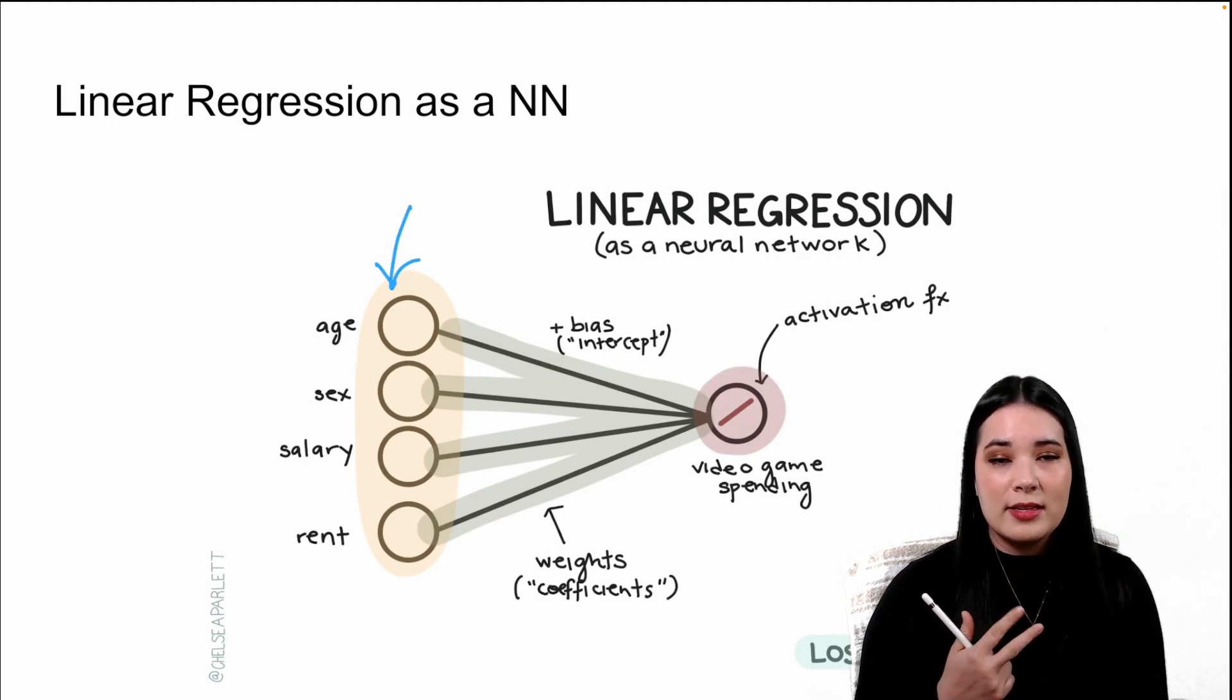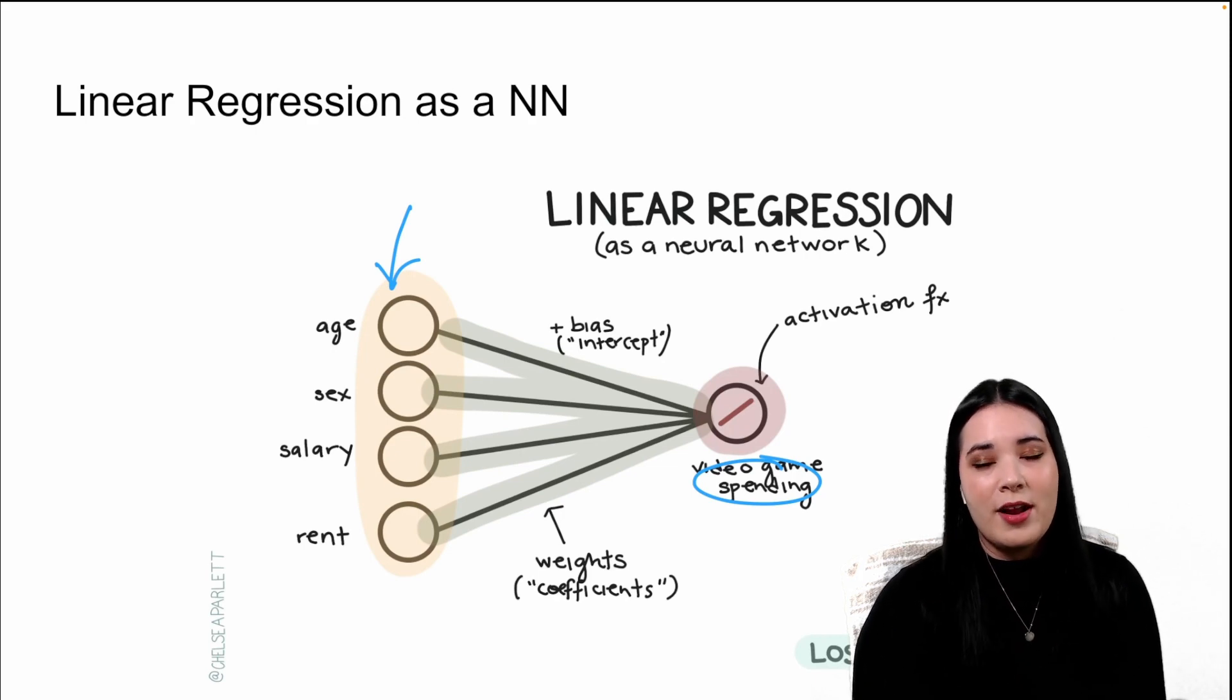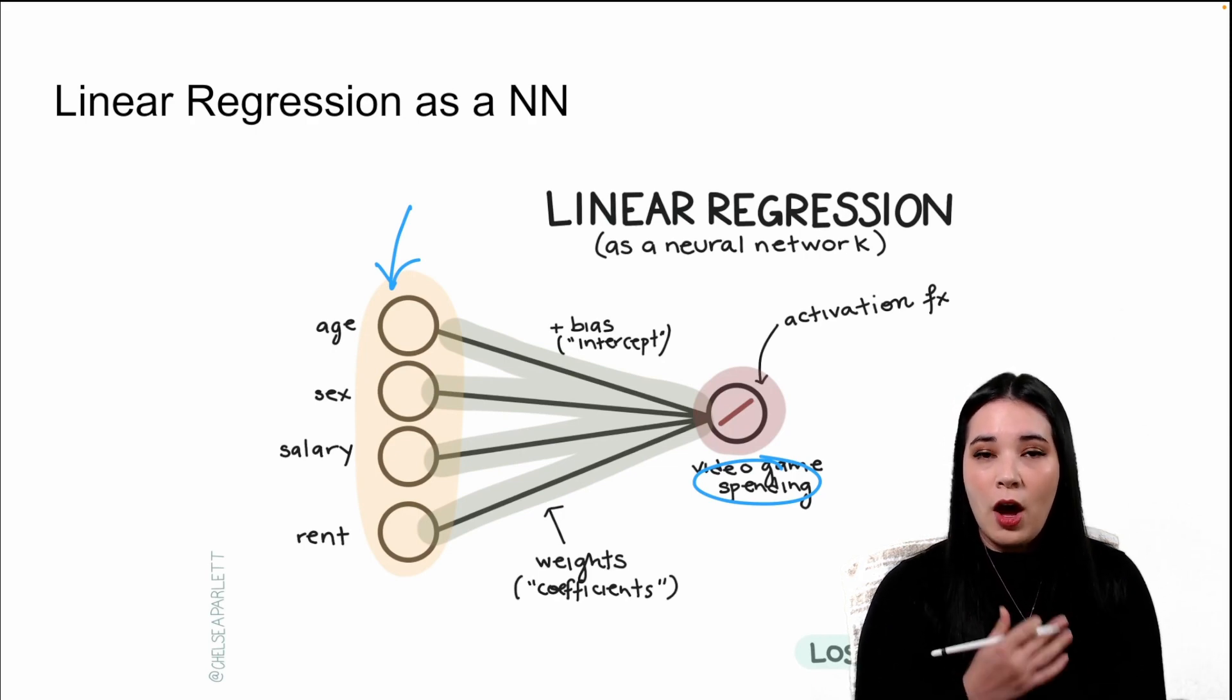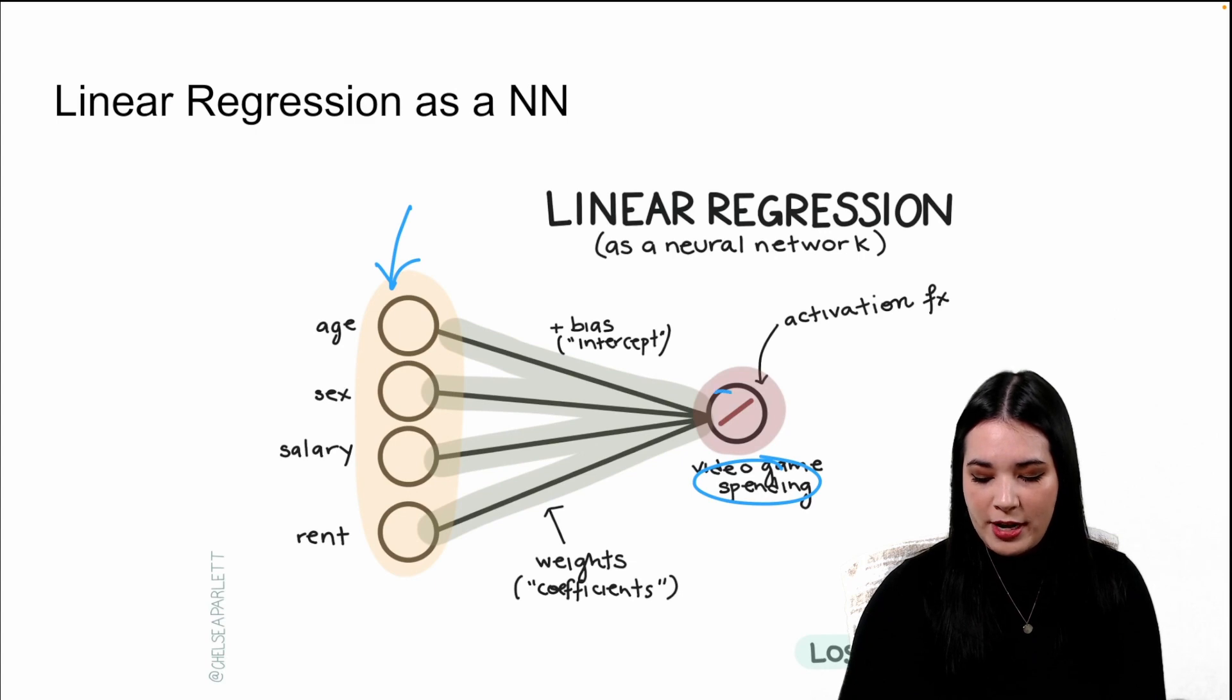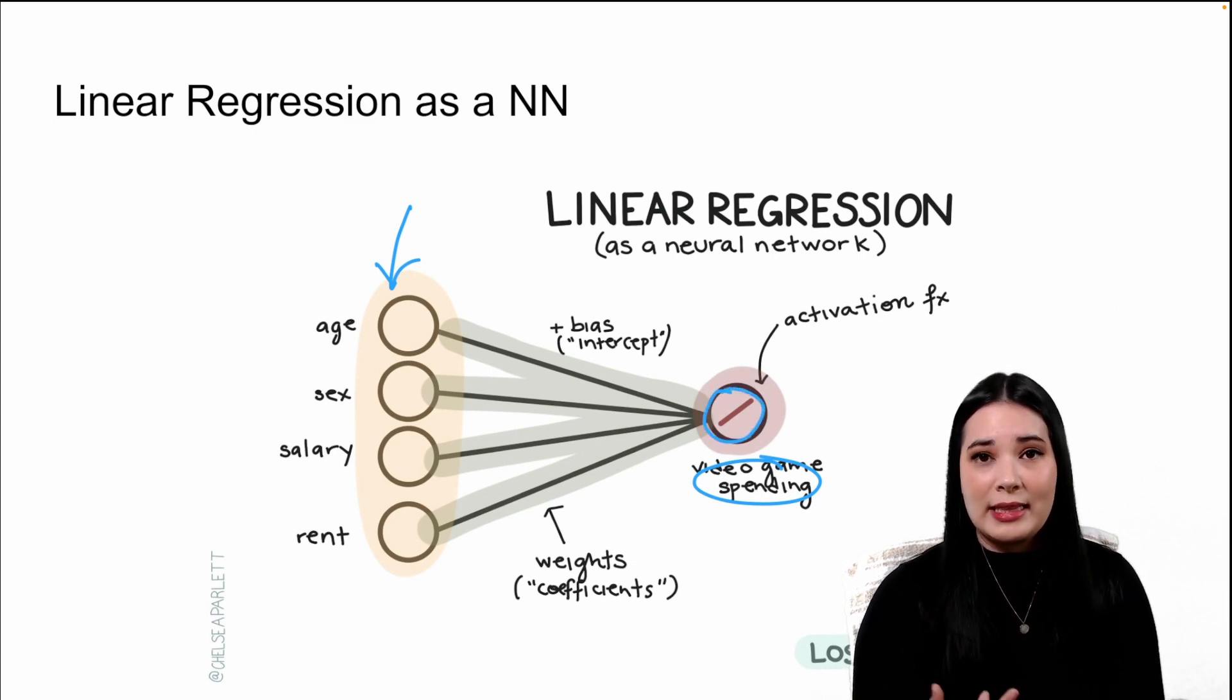Here you can see we have a layer of input values. In this case, we're using age, sex, salary, and rent to predict how much someone is spending on video games. Each of these terms is going to have a coefficient, which we now call a weight. And of course, we're going to have an overall intercept, which we in a neural network now call a bias. All of those values are going to come together in our output node. And because this is linear regression, we're going to use a linear activation.